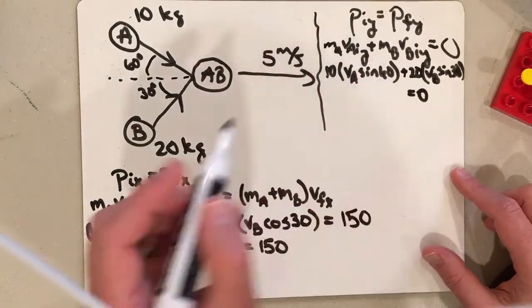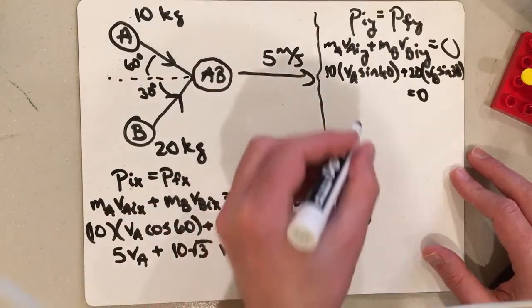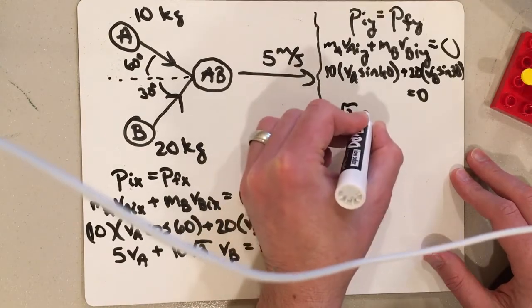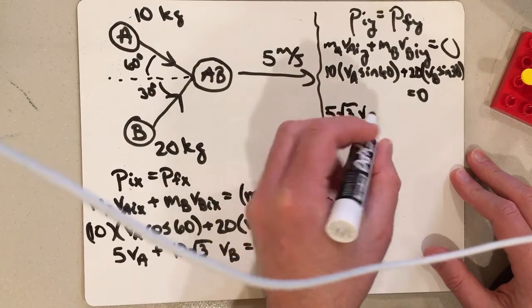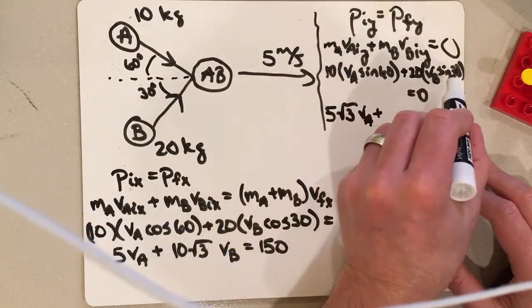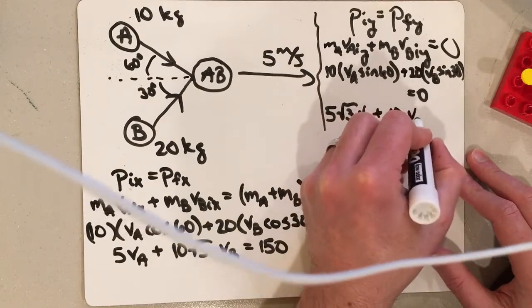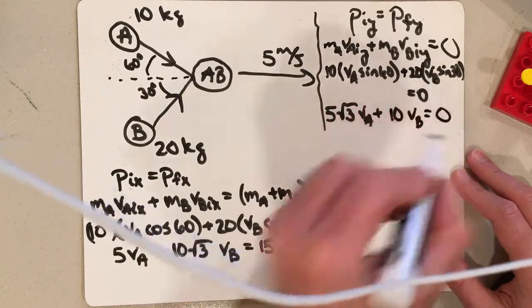10 times the sine of 60, sine of 60 is root 3 over 2, so this is going to become 5 times root 3 VA plus sine of 30 is 1 half, so this is just going to become 10 VB equals zero.